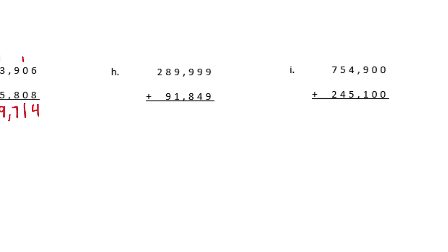Problem H: 289,999 plus 91,849. 9 plus 9 is 18 — carry the 1; 1 plus 9 plus 4 is 14 — carry the 1; 1 plus 9 plus 8 is 18 — carry the 1; 1 plus 9 plus 1 is 11 — carry the 1; 1 plus 8 plus 9 is 18 — carry the 1; and 1 plus 2 is 3. We get 381,848.